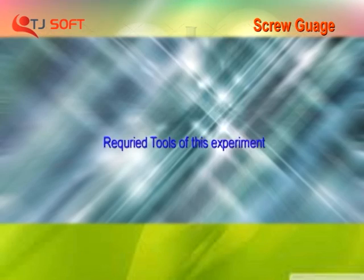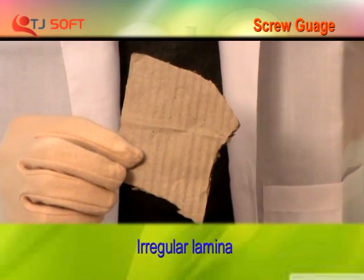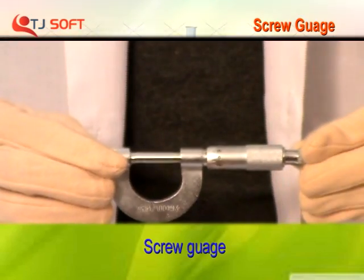It works on the principle of screw. Required tools: metallic wire, glass plate, irregular lamina and graph paper and screw gauge.